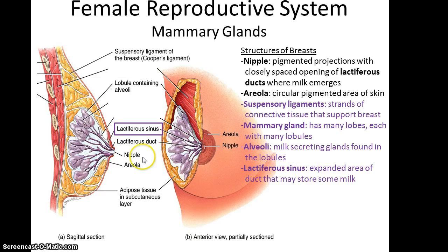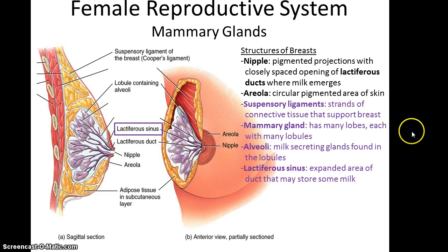When milk is secreted, it goes through the lactiferous sinus, where some is stored. It is usually being produced when the baby actually needs it. When that occurs, the milk will be ejected through the lactiferous ducts, again found in the nipple.